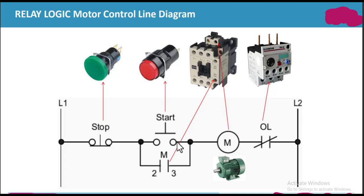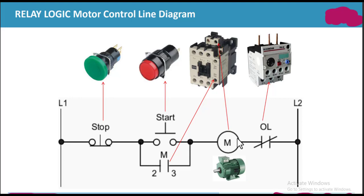When we release the start switch, the current can also pass through this alternate path to the motor. The start switch is just used to start the motor — it is a push button. When we release it, the current has an alternate path to flow to the motor, so the motor will remain in the running condition.